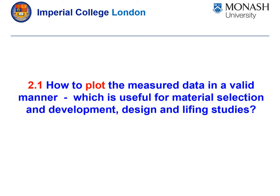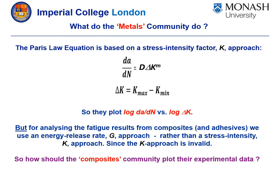Here is the first challenge: how do we plot the measured data in a valid manner? One could begin by asking what the metals community do. The metals community uses the Paris law, which is typically a plot of log dA/dN against the log of the range of the stress intensity factor, where the range of the stress intensity factor is given by this equation. But for analysing fatigue results from composites and adhesives, we use an energy release rate approach rather than stress intensity factor approach, since the K approach is invalid for composites and adhesives. So how should we, the composite community, plot our experimental data?